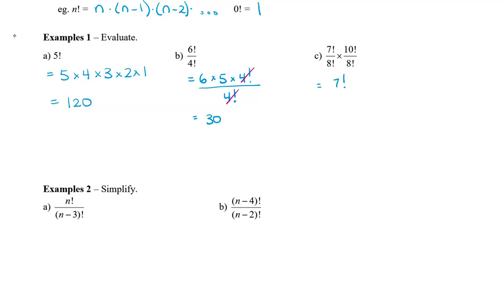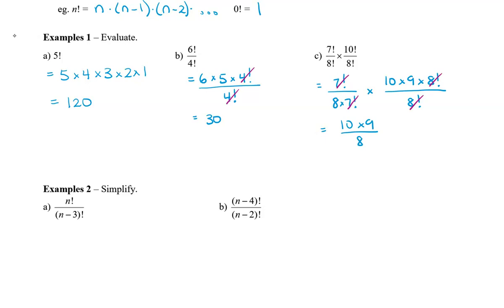For the next expression, we have seven factorial over eight factorial. Eight factorial can be written as eight times seven factorial. In the second fraction, we write ten times nine times eight factorial divided by eight factorial. The seven factorials cancel and the eight factorials cancel, leaving ten times nine divided by eight. Reducing, we get 45 divided by four.